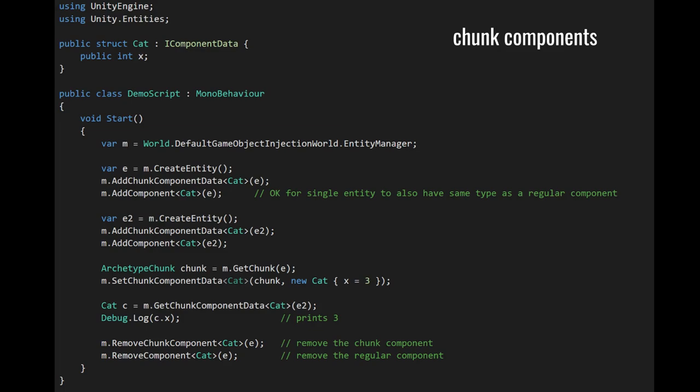This is just affecting the archetype of the entity, and so with both these calls, the entity is getting moved to a different chunk. This is in no way destroying the chunk component — only when the chunk itself is destroyed because it no longer has any entities do the chunk components get destroyed. Also, perhaps unintuitively, when an entity is moved from one chunk to another, the chunk components of either chunk are not affected. It's only when setChunkComponentData is called that the chunk component value gets modified. These chunk components really belong to the chunks themselves, not the entities within that chunk.